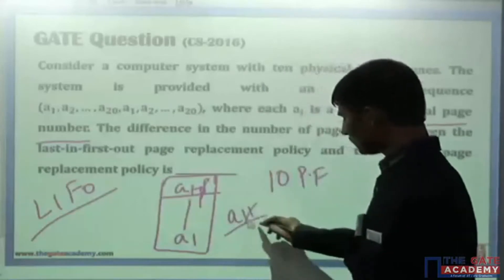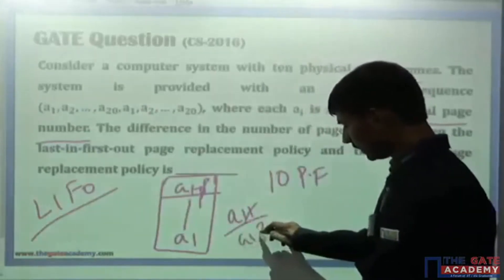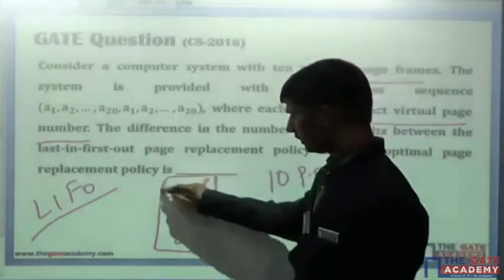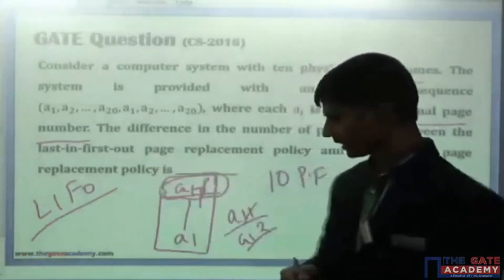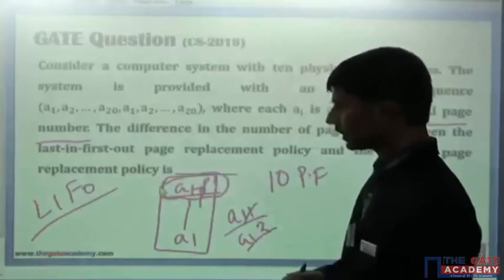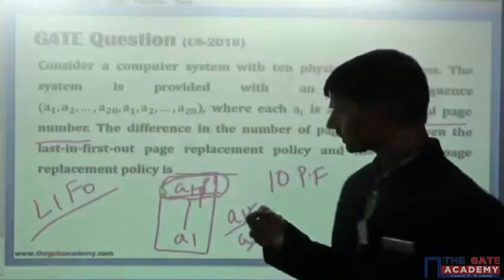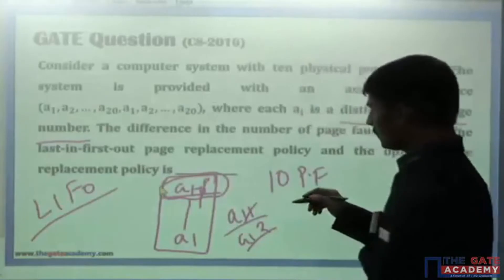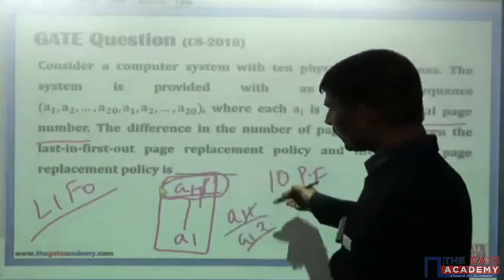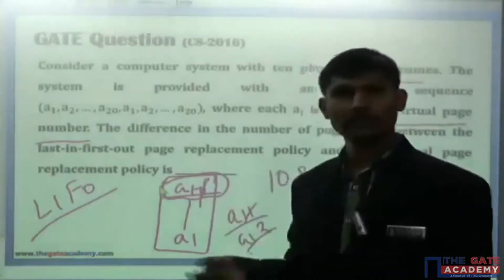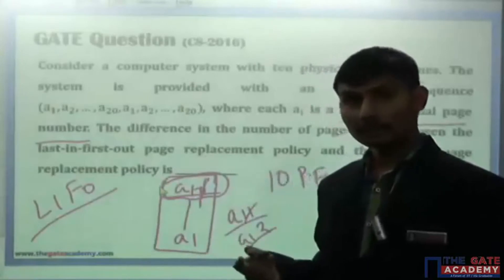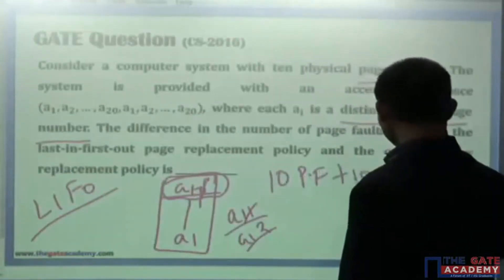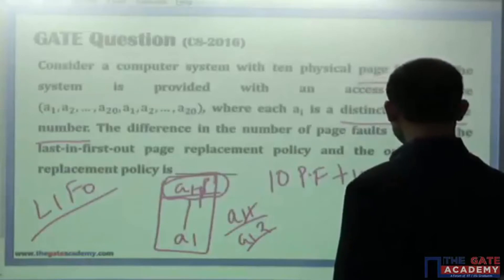The next page A12 comes, and every time you will remove the page which most recently entered — the last in, first out. In this manner, A11, A12, A13 up to A20 every page number will suffer a page fault. So 10 plus 10, totally 20 page faults will be there initially.